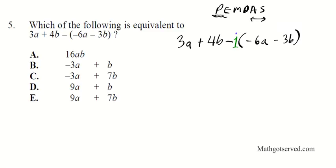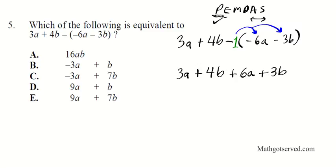Distributing the negative 1 to the two quantities in parentheses: we bring down 3a plus 4b, and then negative 1 times negative 6a gives plus 6a, and negative 1 times negative 3b gives plus 3b. Now combining like terms: 3a plus 6a is 9a, and 4b plus 3b is 7b. So the answer is 9a plus 7b, which is option E.